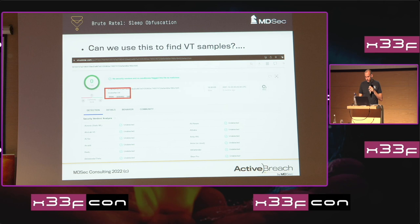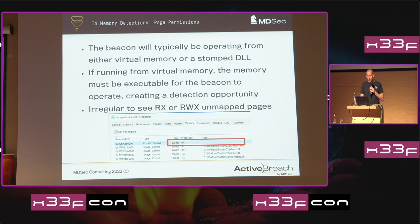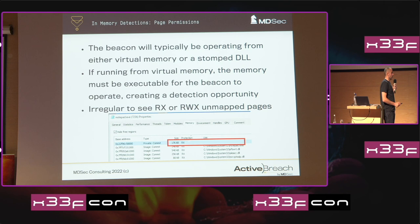Moving on from signatures, what else can we use to spot the beacon? Once the beacon is up and running in memory, it'll typically operate from virtual memory or from a stomped DLL. If it's operating from virtual memory, there are a few telltale indicators we can focus on to build detections. Perhaps one of the most obvious is the page permissions. Outside of CLR JITs, it's pretty irregular to see executable pages that are not backed by a DLL. If we see read-execute page permissions set and it's not backed against a physical DLL on disk, that's probably suspicious.